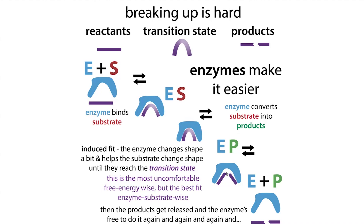We consider that product release is not going to be rate-limiting and that the product isn't going to do something weird like inhibit. So we take an enzyme, give it as much substrate as it needs, measure its velocity — that's how we do Michaelis-Menten kinetics, and that's how we figure out how good the enzyme is.